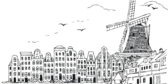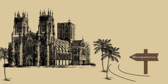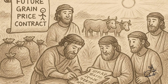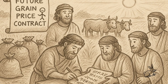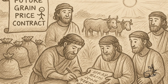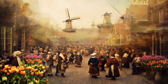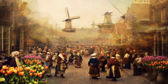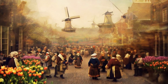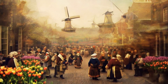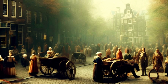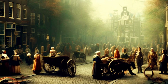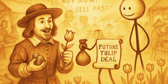The concept of derivatives isn't new — in fact, it dates back thousands of years. Ancient Mesopotamians used contracts that resemble modern derivatives to lock in prices for future grain harvests. In the 1600s in the Netherlands, tulip mania gave rise to speculative derivative-like contracts, similar to futures, to buy tulip bulbs.